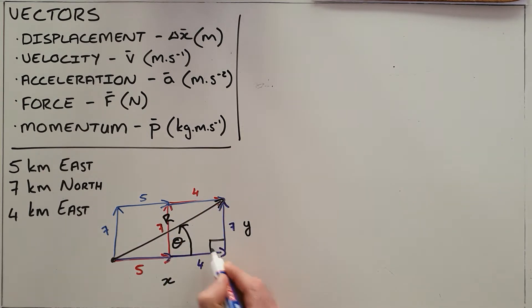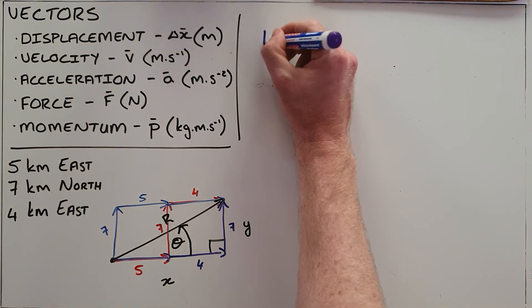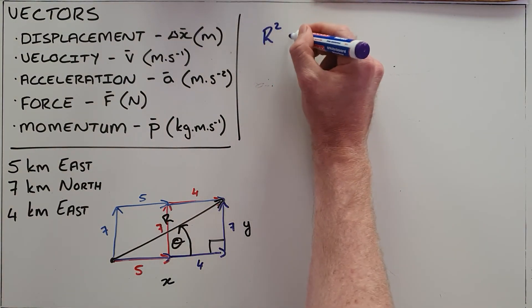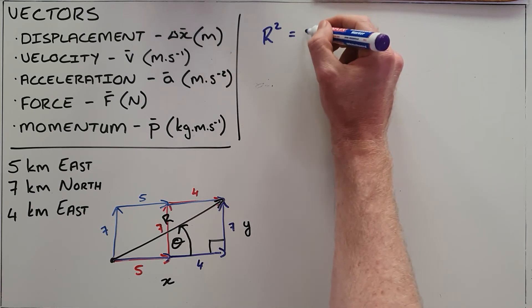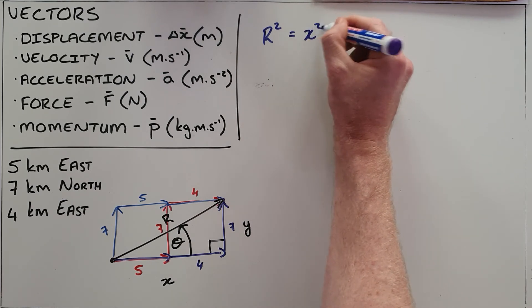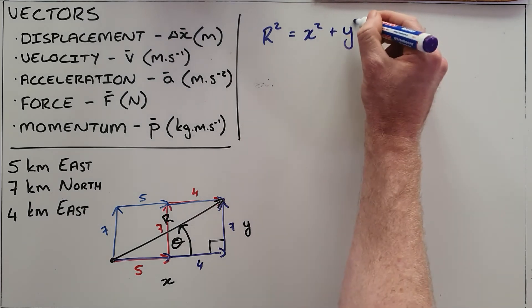As we can see, we now have a right angle triangle and the right angle triangle allows us to use Pythagoras, which says that the resultant vector squared is equal to the x component squared plus the y component squared.